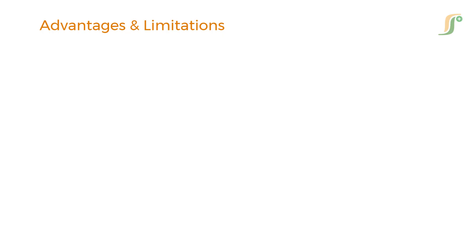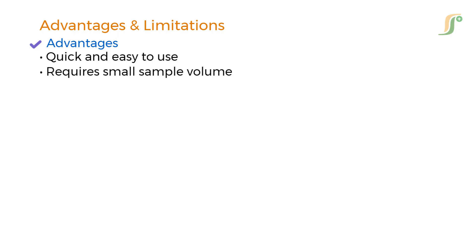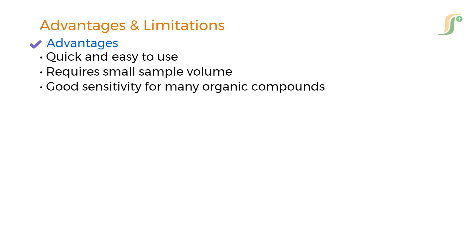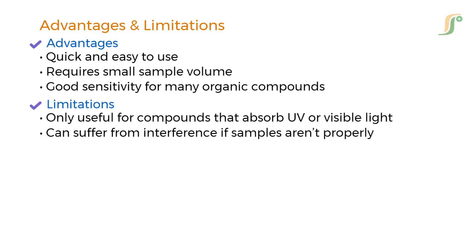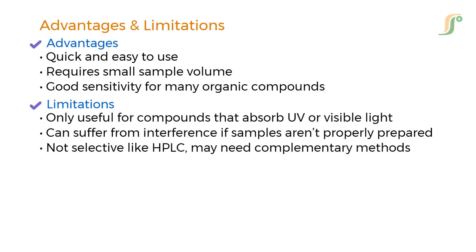Advantages and limitations: The advantages include that it is quick and easy to use, requires small sample volume, and offers good sensitivity for many organic compounds. Limitations include that it is only useful for compounds that absorb UV or visible light, can suffer from interference if samples aren't properly prepared, and is not as selective as HPLC, so it may need complementary methods. That said, when used correctly, UV-visible spectrophotometry is a powerful tool for any pharmaceutical lab.